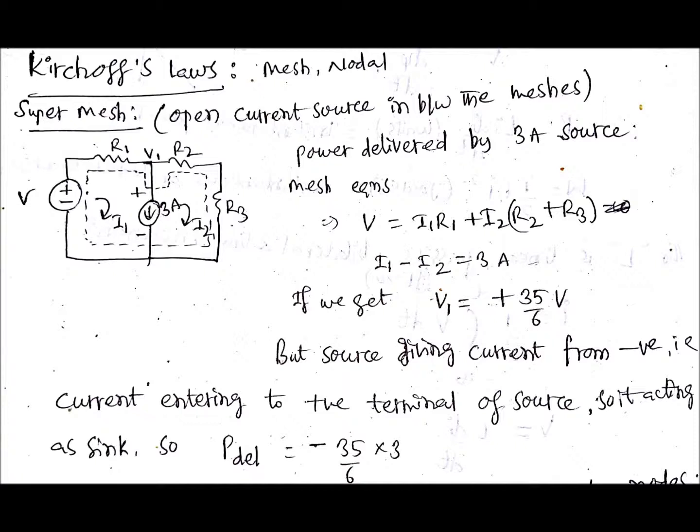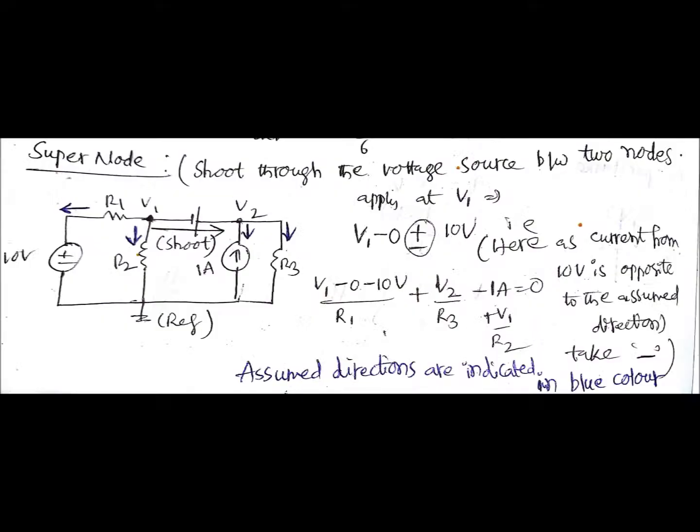Then coming to the super node. Here in super node there will be a voltage source between two nodes, so what do you need to do? You need to shoot through, that means you directly shoot into the next node from the previous node and apply KCL. Let us say here there is one voltage source between the nodes V1 and V2. Then how you are going to apply the nodal law? So let us consider the node 1.